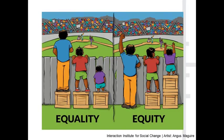You may have seen this graphic before — on the left, each person has been provided with a crate in order to see over the fence and see the baseball game. While that's equal, it doesn't necessarily help the person on the right-hand side. On the right-hand side of the picture, those three crates were redistributed so that the person who needed the biggest boost to see over the fence is able to see the game, and the person on the left who didn't need much help doesn't get a crate. This is sometimes described as horizontal versus vertical equity — the one on the left is horizontal, and the one on the right is vertical: those most in need should get more resources.